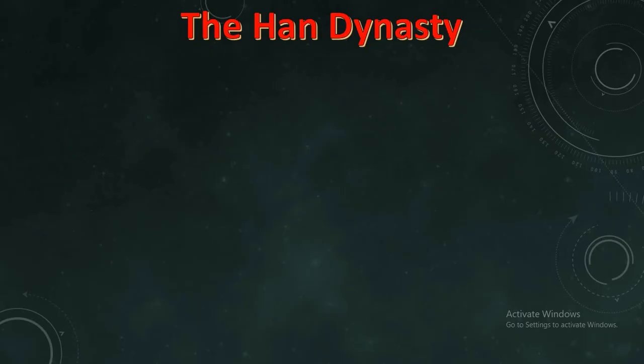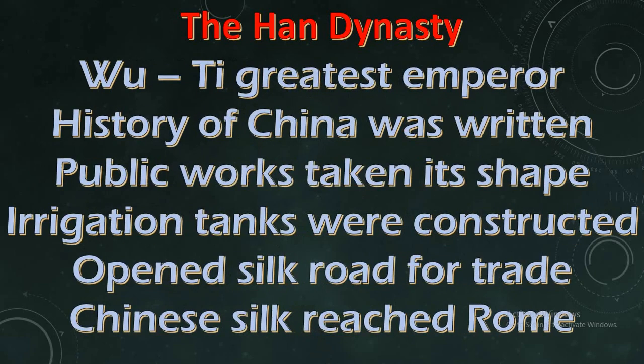We will move on to the next dynasty — the Han Dynasty. Wu Ti was the greatest emperor of this dynasty. He was considered a good ruler. During his period, the history of China was written. He also undertook many public works, and irrigation tanks were constructed to develop agriculture.